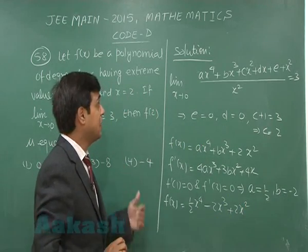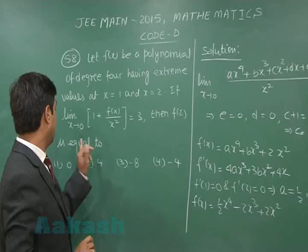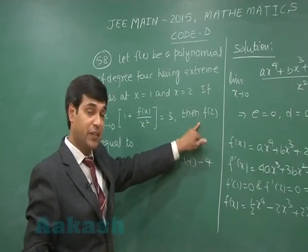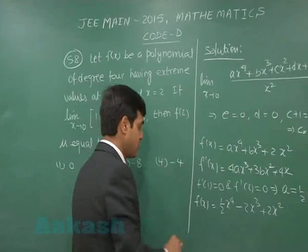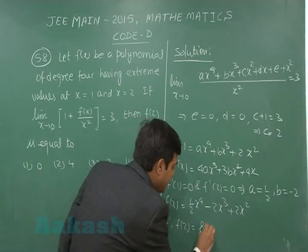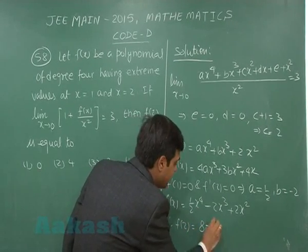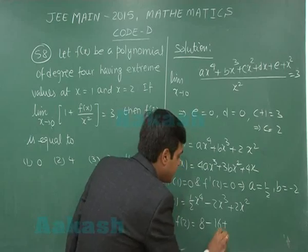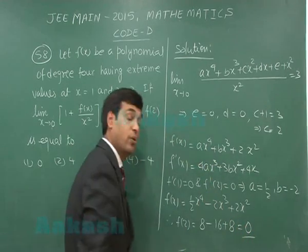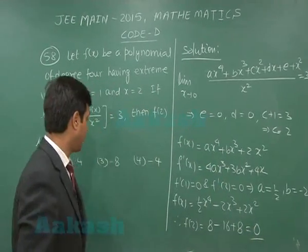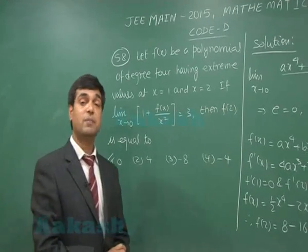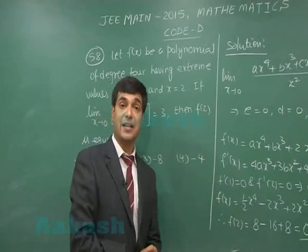Thus the polynomial is f(x) = (1/2)x⁴ − 2x³ + 2x². The question asks for f(2), the value of the function at x = 2. Therefore, f(2) = 8 − 16 + 8 = 0. From the given options, option number 1 is correct and the answer is 0.